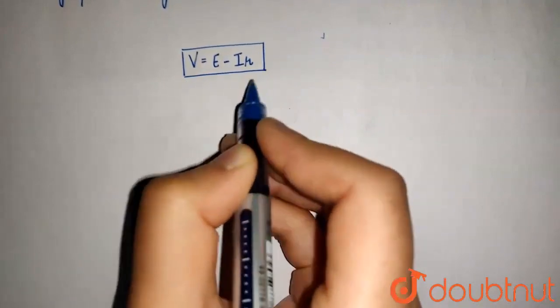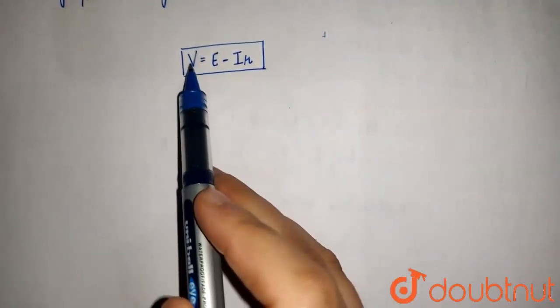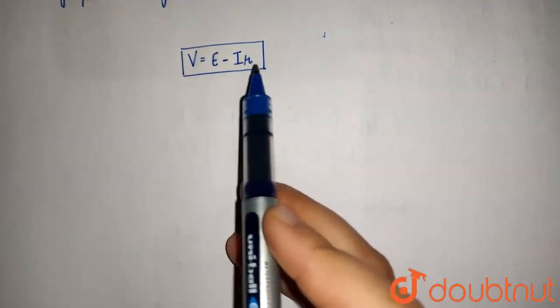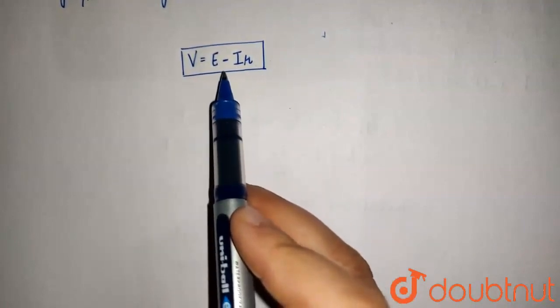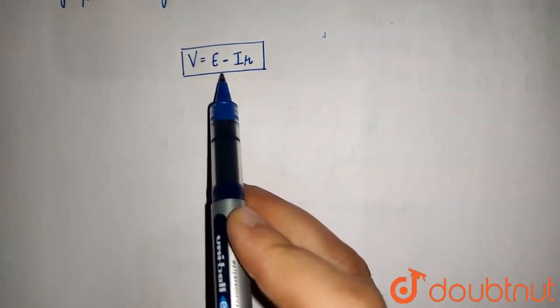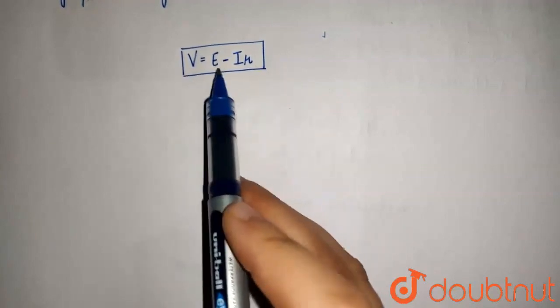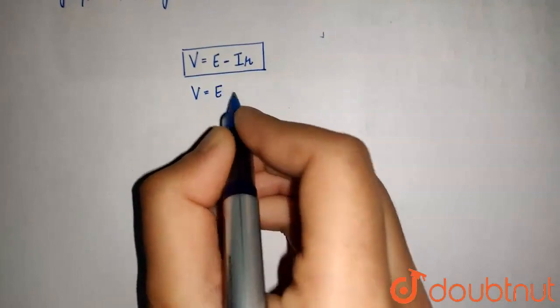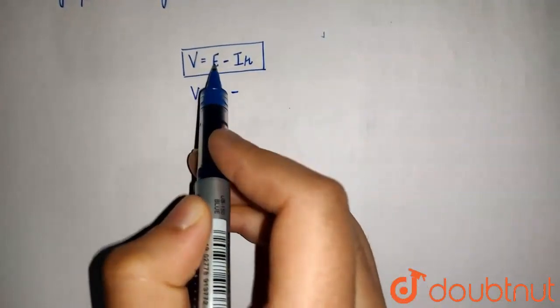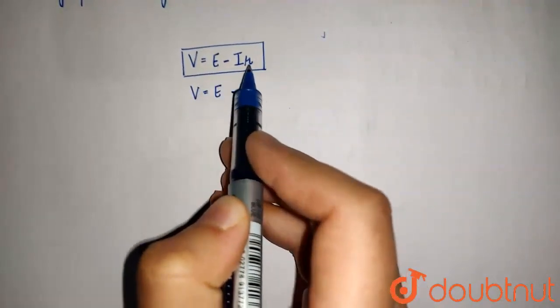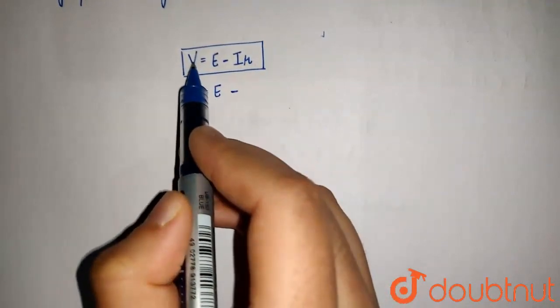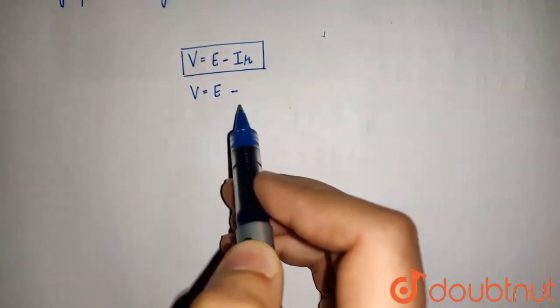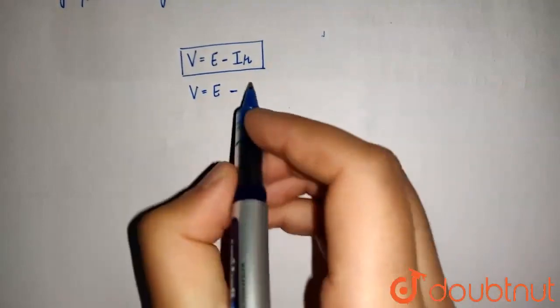We have to plot a graph between this V and external resistance R but we don't see it here. So, we have to introduce external resistance R in this equation. E is constant, that is the EMF of the cell, and r is constant, that is the internal resistance of the cell. But this thing is variable and the total current is variable.